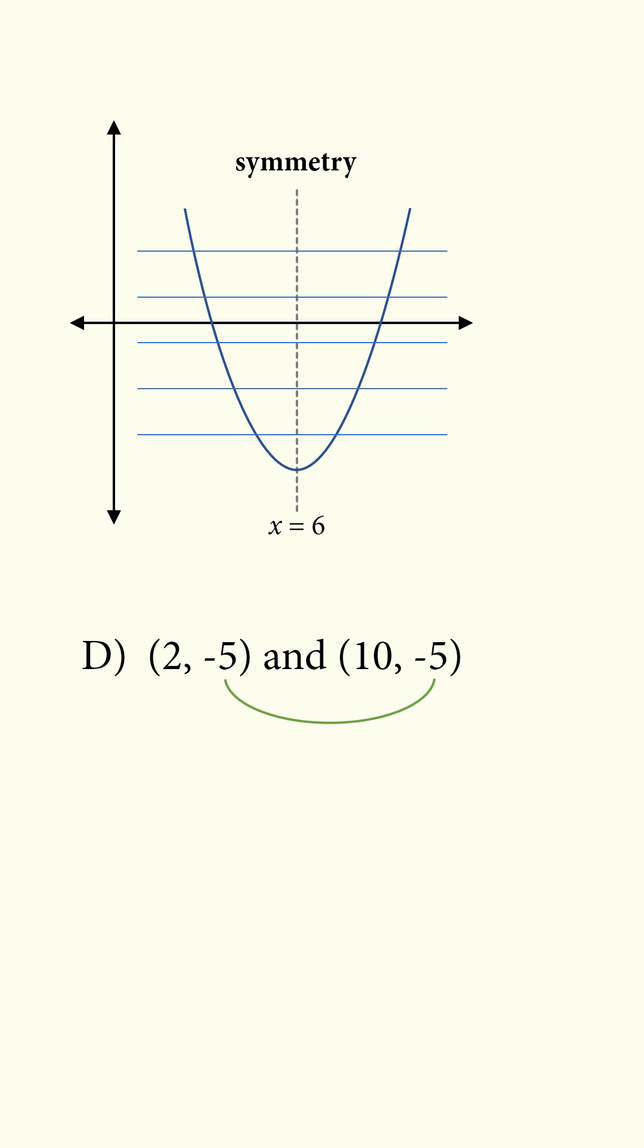Finally, answer choice D: the two pairs of points have the same y coordinates, and their x coordinates have the same distance to x = 6. So the correct answer is D.